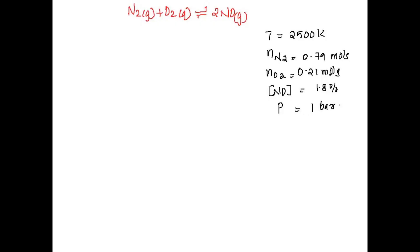Hi everyone. We have to find the equilibrium constant value and Gibbs free energy for the reaction N₂ gas plus O₂ gas reversibly giving 2 NO gas.